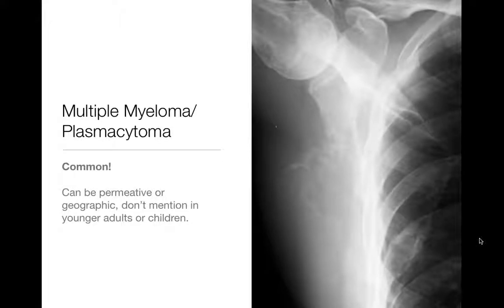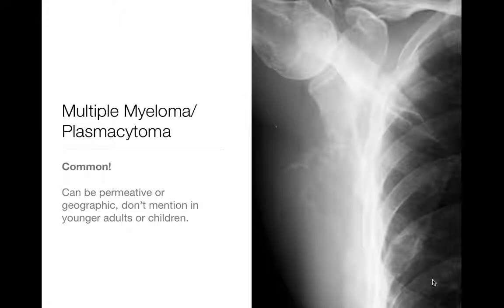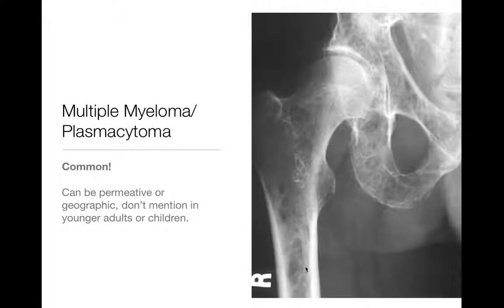Multiple myeloma and plasmacytoma — very common in older adults over 50. Please don't consider this in younger adults or kids. A solitary plasmacytoma, like in the scapula here, can occur as an expansile lytic lesion. If you look closely, there's another lesion in the rib — another focus of multiple myeloma. This is the more geographic appearance of plasmacytoma, versus the more permeated moth-eaten appearance of diffuse multiple myeloma seen throughout the femur and pelvis. Super common — please think of it in older adults.